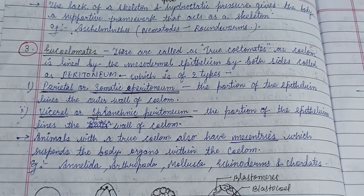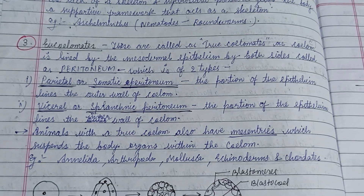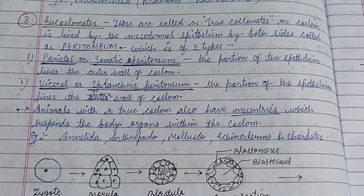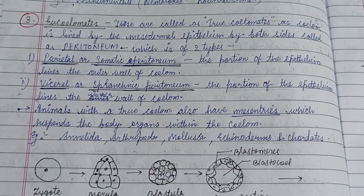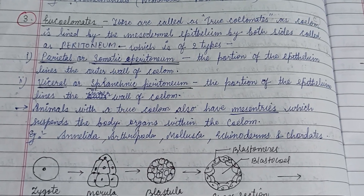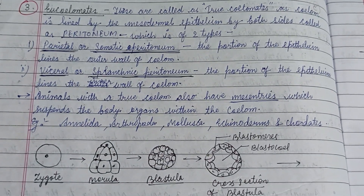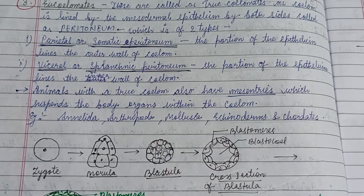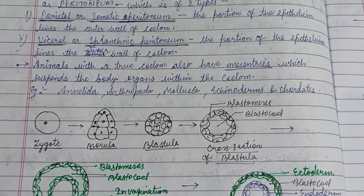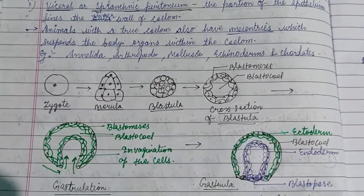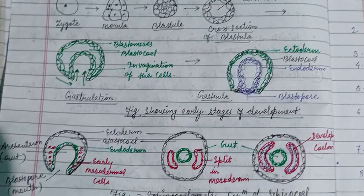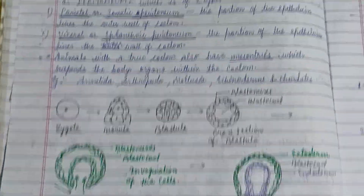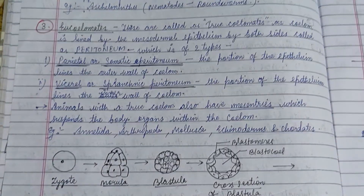Eucoelomates are called true coelomates, as the coelom is lined by mesodermal epithelium on both sides, called the peritoneum. The peritoneum is subdivided into the parietal or somatic peritoneum and the visceral or splanchnic peritoneum. A figure shows the early stages of development of these structures.